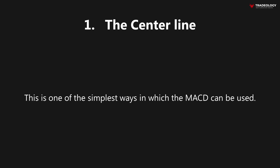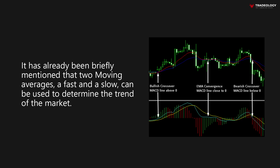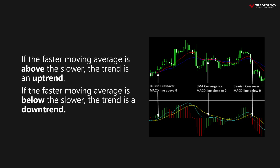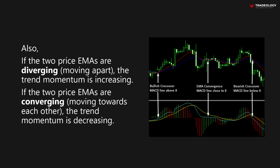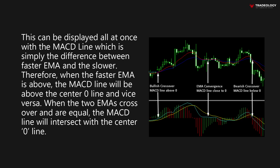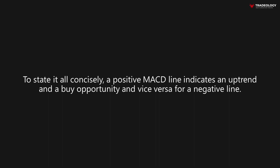Let's have a look at the center line — one of the simpler ways in which the MACD can be used. If the fast moving average is above the slower, the trend is an uptrend; if the faster is below the slower, the trend is a downtrend. If the two price EMAs are diverging, the trend momentum is increasing; if converging, the trend momentum is decreasing. This can all be displayed at once with the MACD line, which is simply the difference between the faster EMA and the slower. Therefore, a positive MACD line indicates an uptrend and a buy opportunity, and vice versa for a negative line.